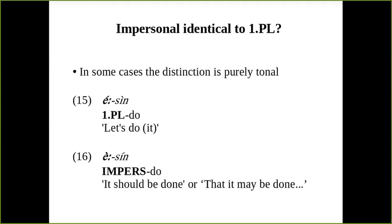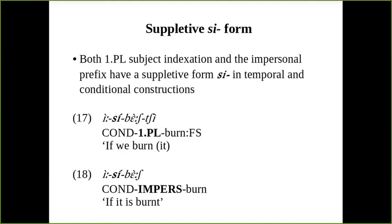In some cases, the distinction between these two constructions is purely tonal. In what I call in my dissertation the dependent stem construction — essentially like an exhortative construction — example 15 'let's do it' versus example 16 'it should be done or that it may be done,' the only difference between the two is tonal. There is also a suppletive form C, a prefix used in temporal and conditional constructions. As in examples 17 and 18, 'if we burn it' and 'if it is burnt,' we have exactly the same prefix with the same tonal patterns, and the only difference is the presence of the final suffix.